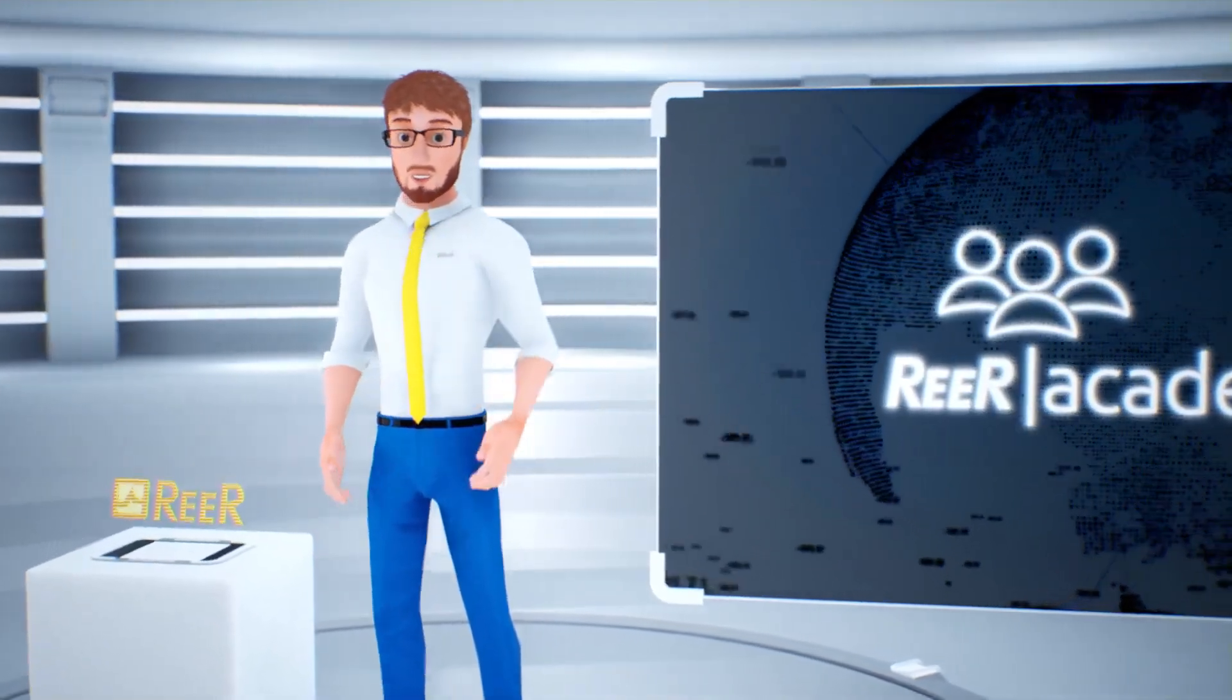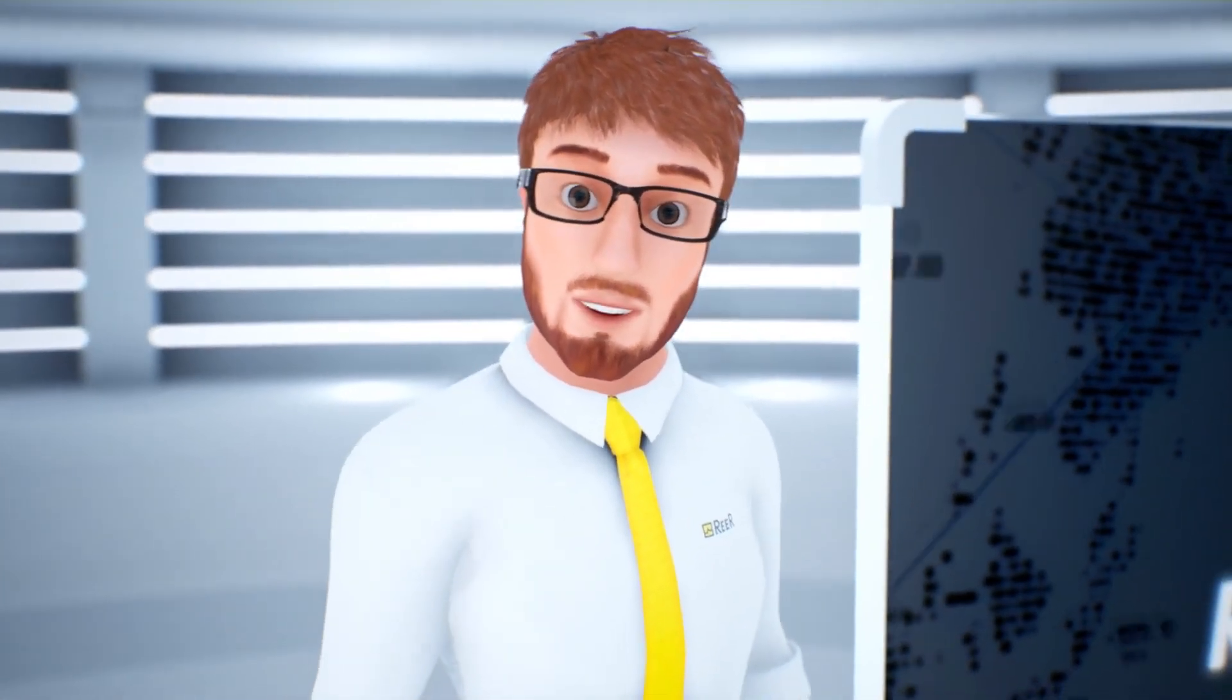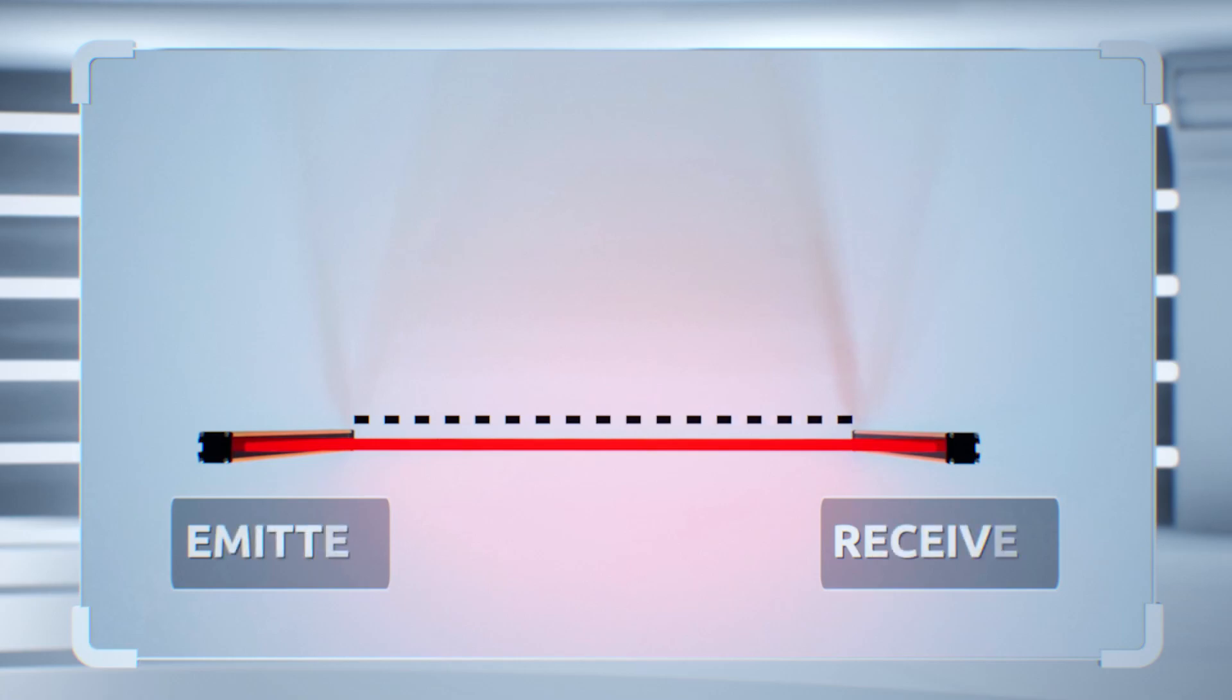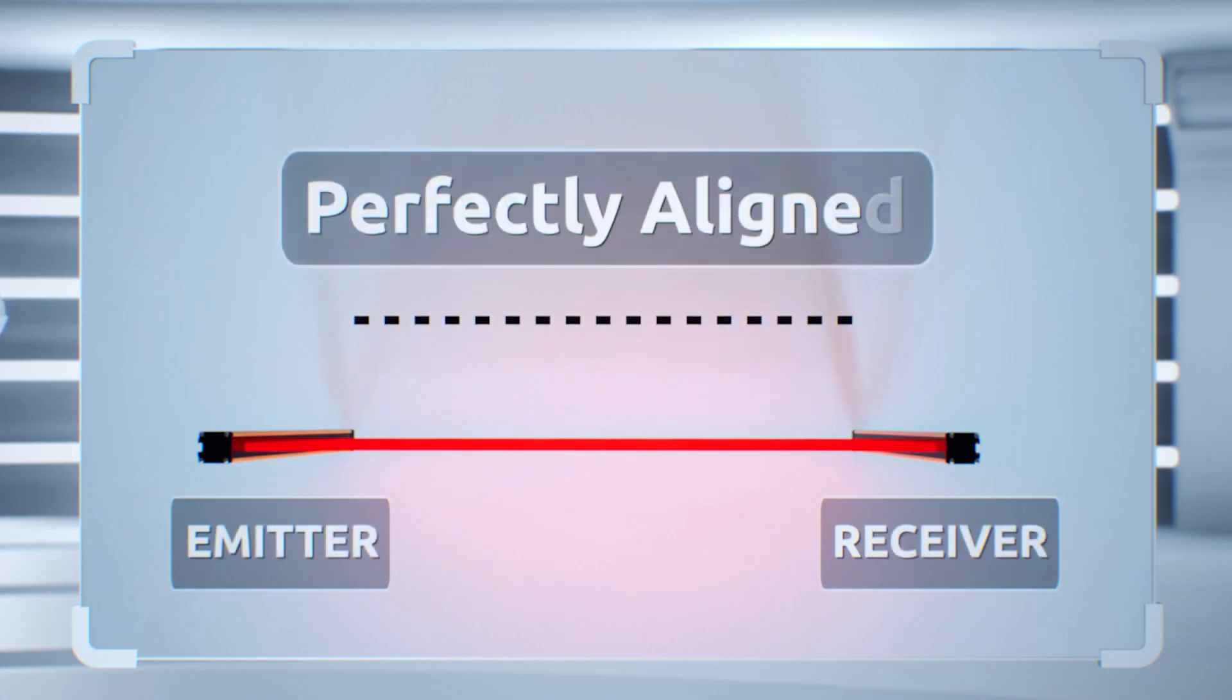In order for a light curtain to be considered safe, two important factors must be taken into account during the assembly phase. The first is that the emitter and receiver must be perfectly aligned, with almost no margin of error.